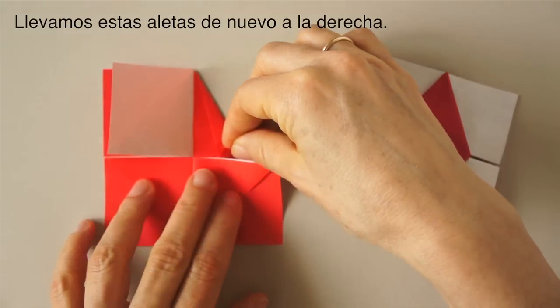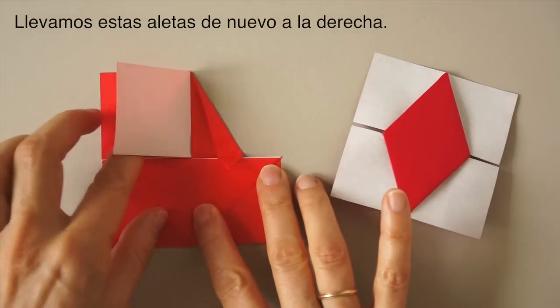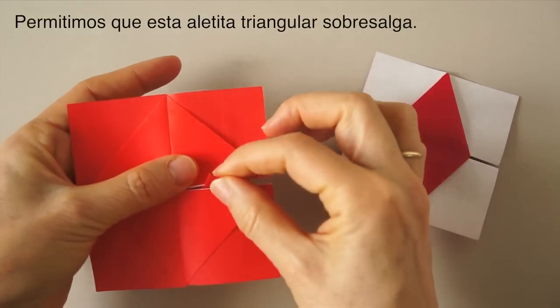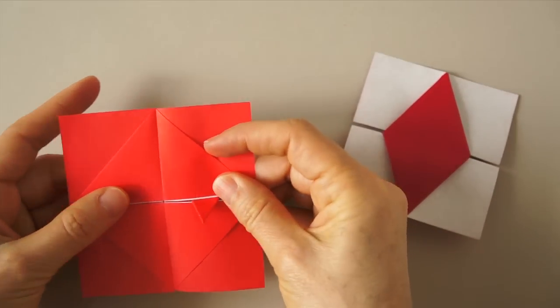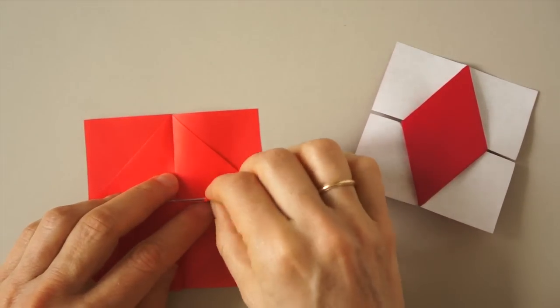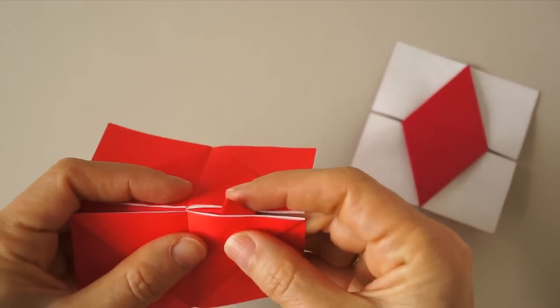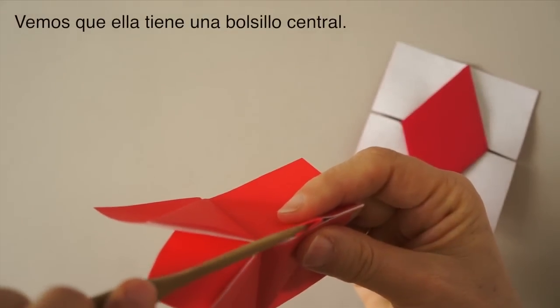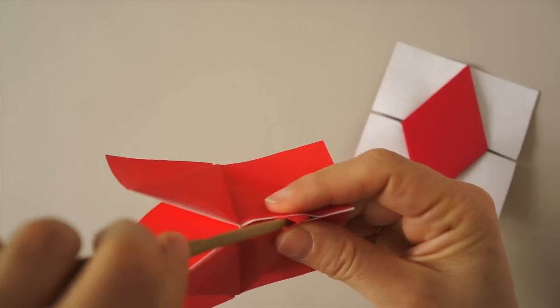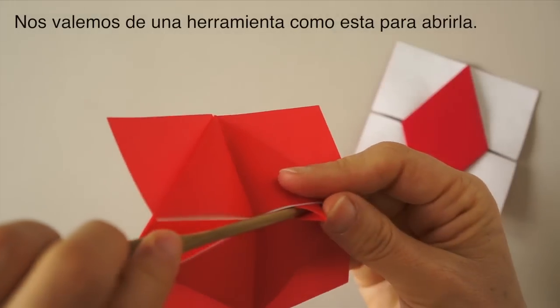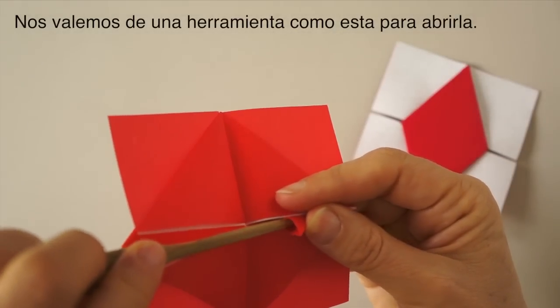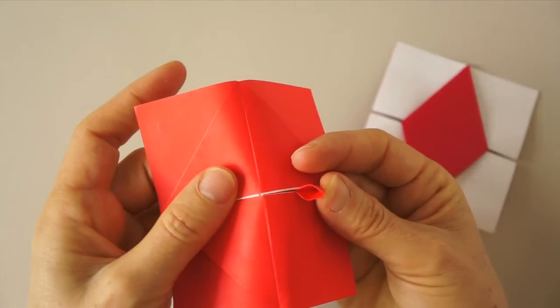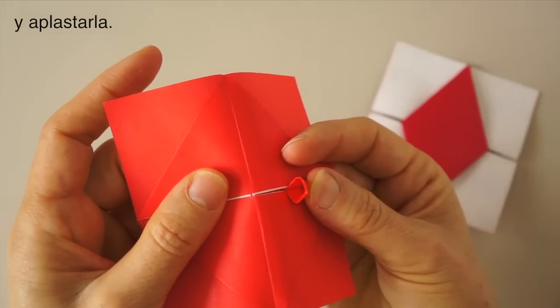Now, we bring the flaps back. And we leave just this tiny little flap come through the gap. Now, we see that this flap has a central pocket here. So, we are going to insert the tool here and open the pocket and squash it.